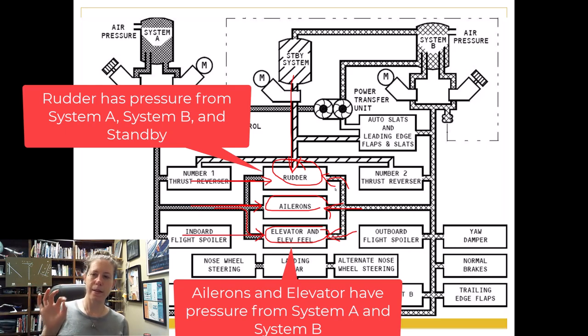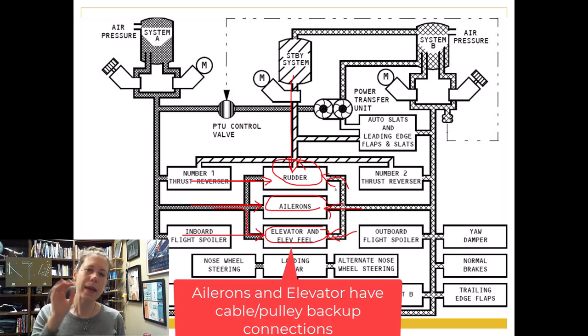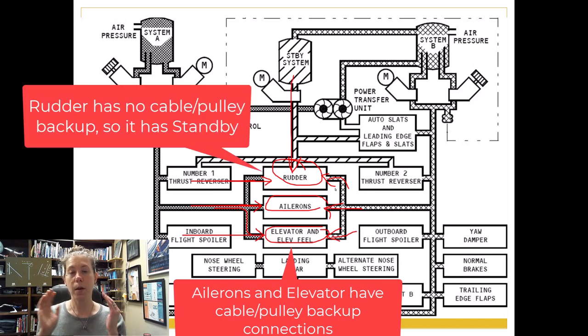The reason for this is because our ailerons and our elevator on the 737 have mechanical backups, meaning we actually have cables, control cables running out to those controls that the crew could use if we had a loss of System A and System B. But if we had a loss of System A and System B, we would still want some control of our rudder and we would get that through that standby system.